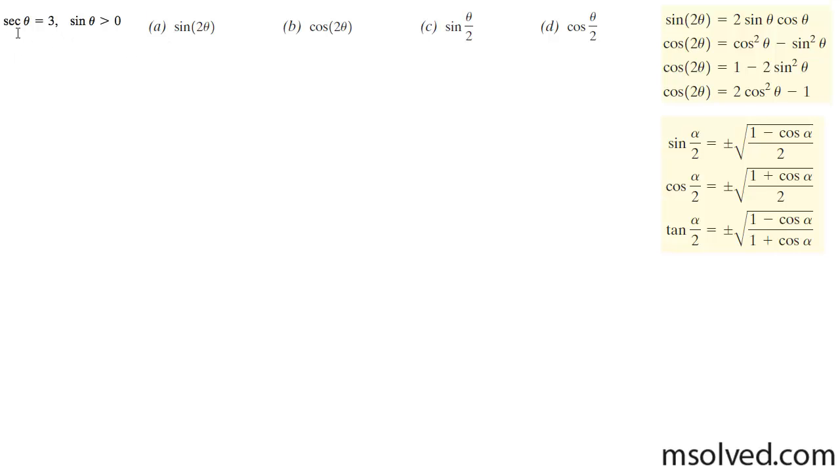So what I'm going to do is I know the secant is equal to 1 over the cosine, which is the same thing as r over x. So this is the same thing as 3 over 1. So I know my cosine is actually equal to 1 third in this case.